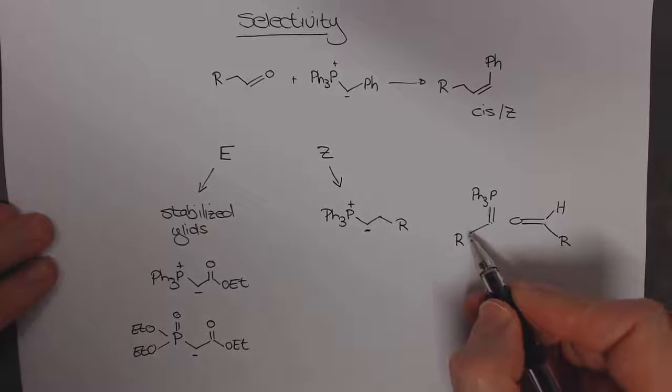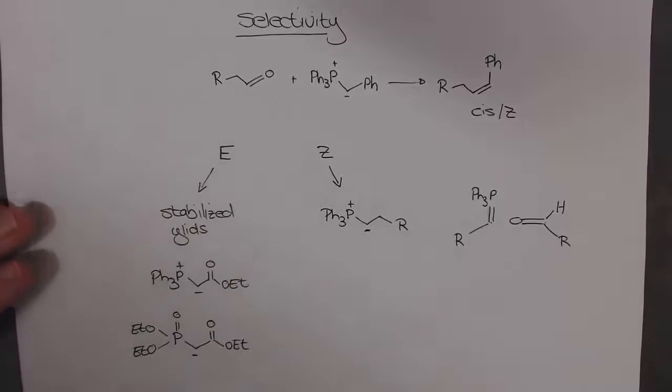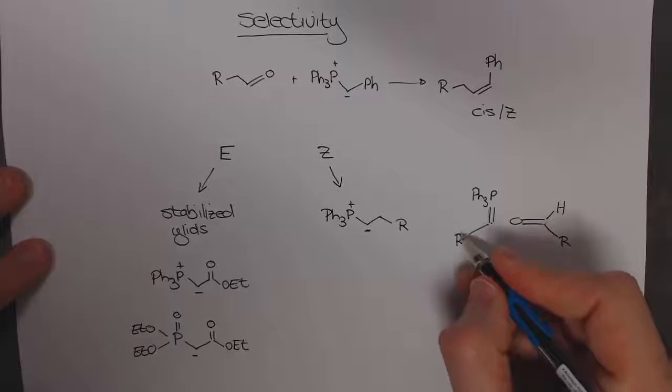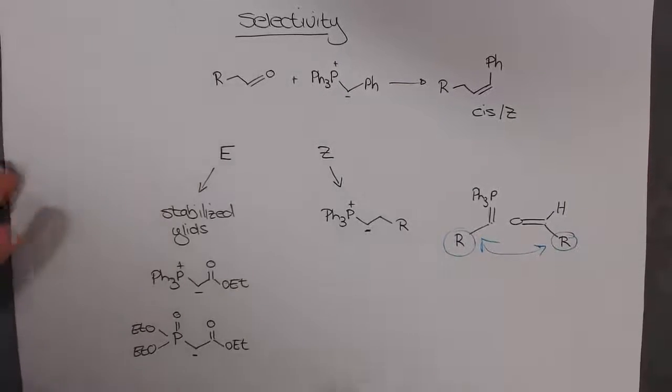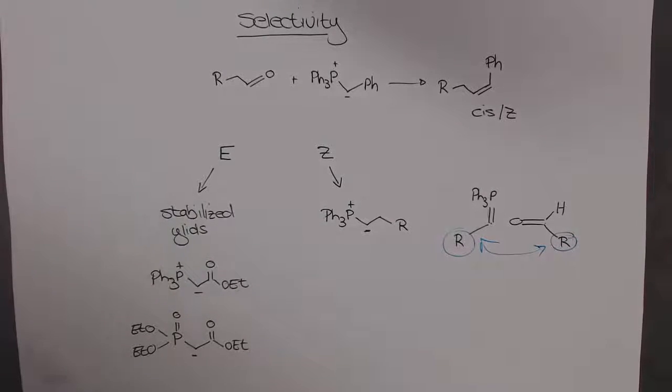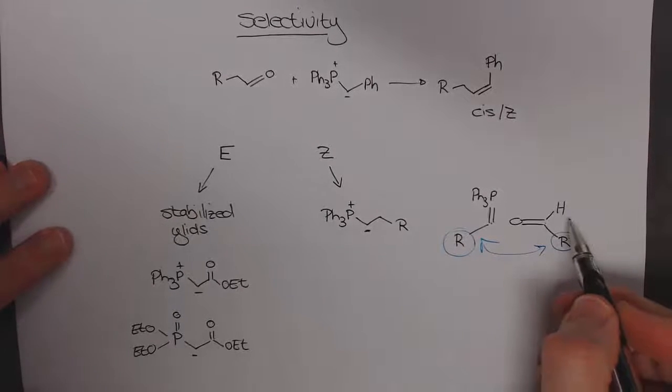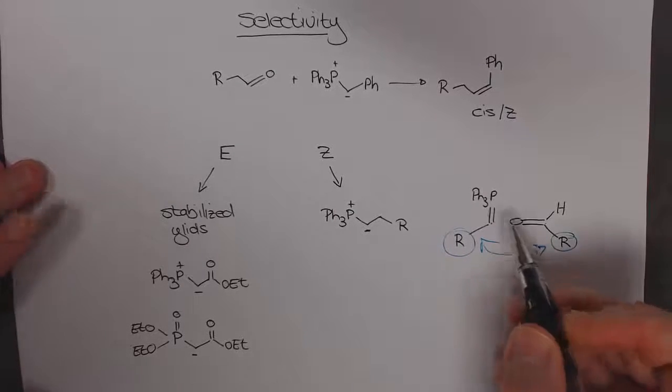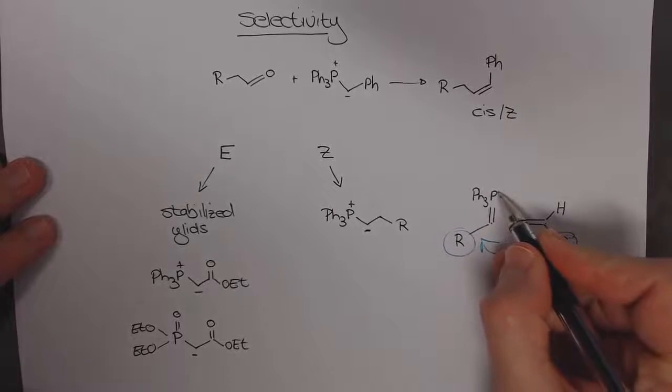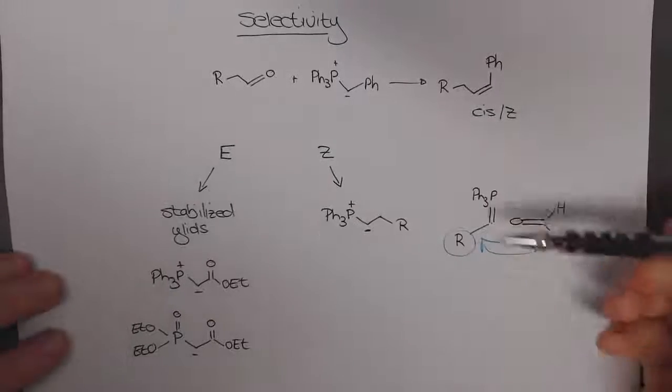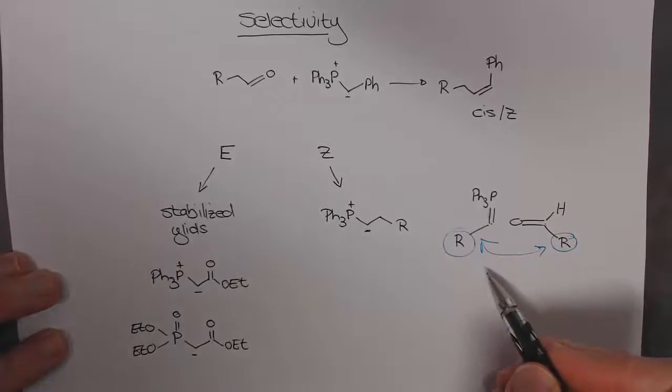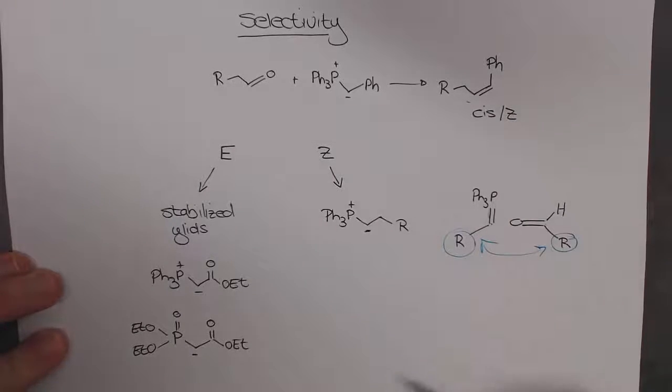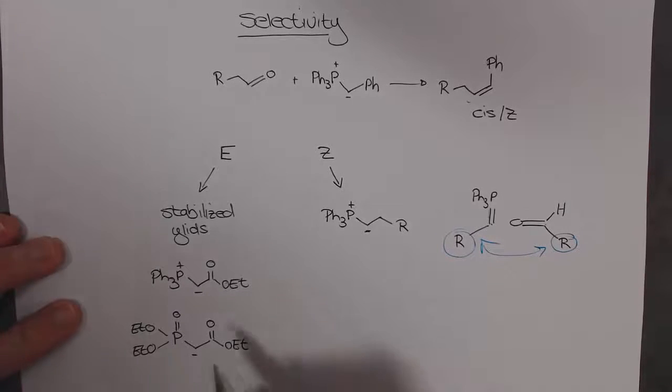These two R-groups, we want to keep them as far away from each other as possible because they're big steric interactions. But as you should be able to see, as this comes in on top, in order for the oxygen to connect to the phosphorous, it's going to twist round. And the two R-groups are going to be on the same side, and that's what gives us the cis-selectivity that we see for unstabilized ylids.